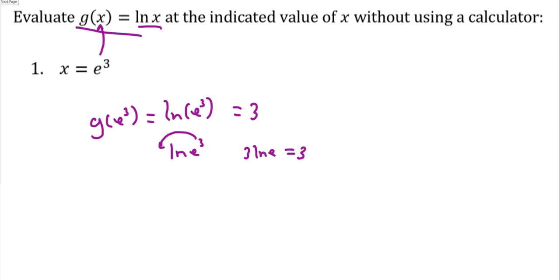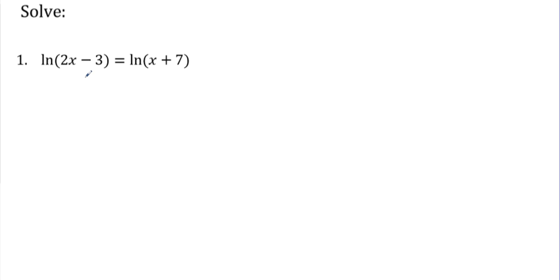So here we're going to use our one to one property. Same log, same log. So this is going to equal to that. And we just simply solve this basic equation. Subtract x. Get rid of that negative 3. And we have x is equal to 10. All righty. So I'm going to go ahead and get this one posted and get part 2 up and running here in a second.